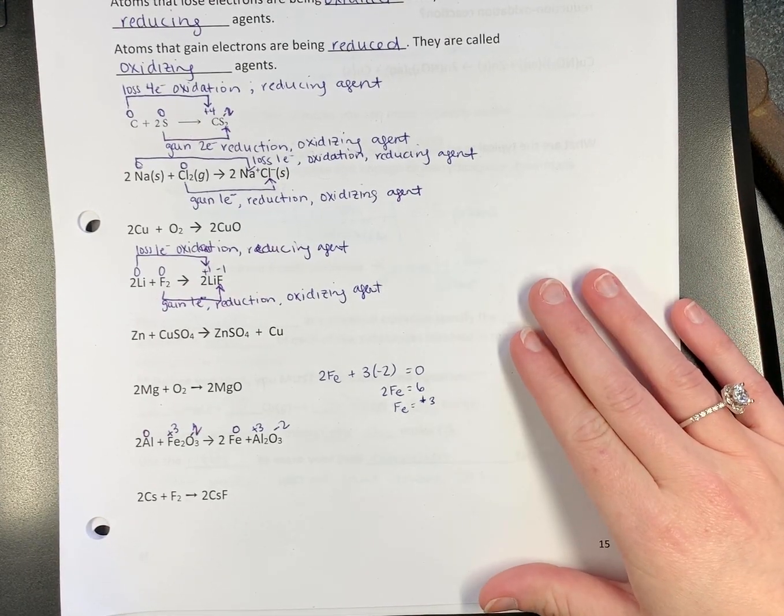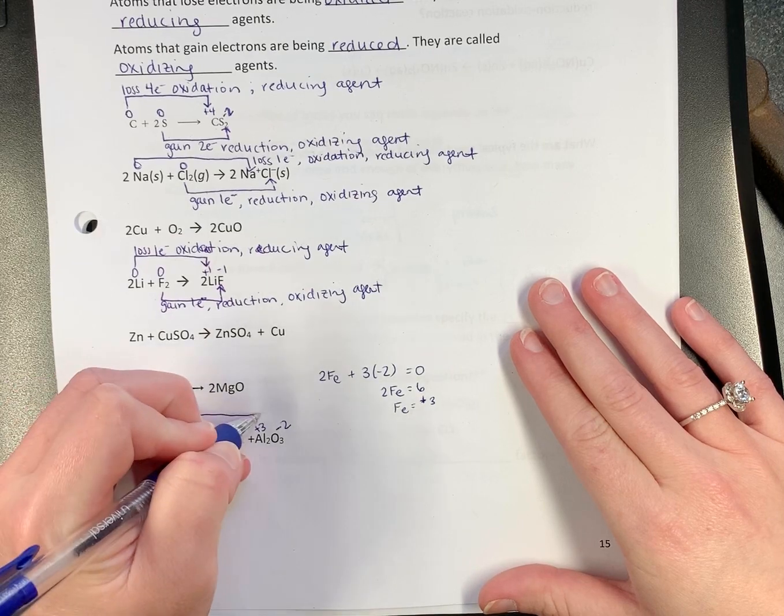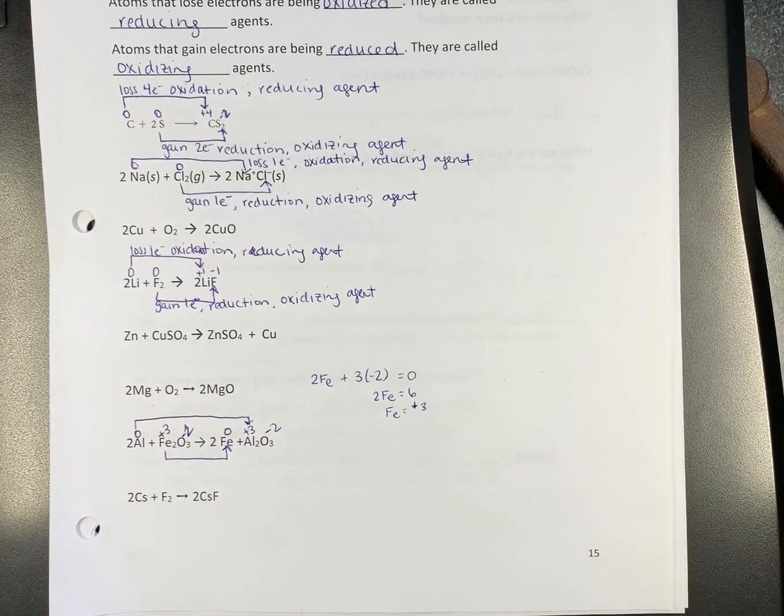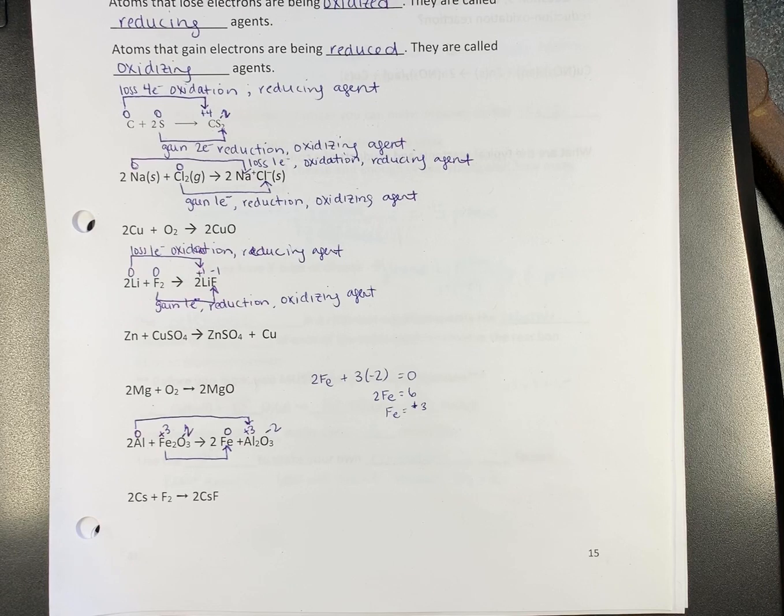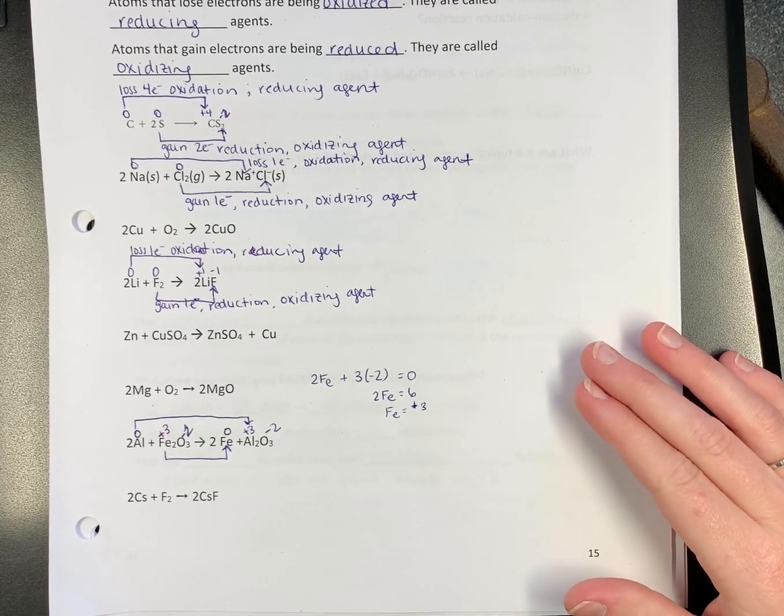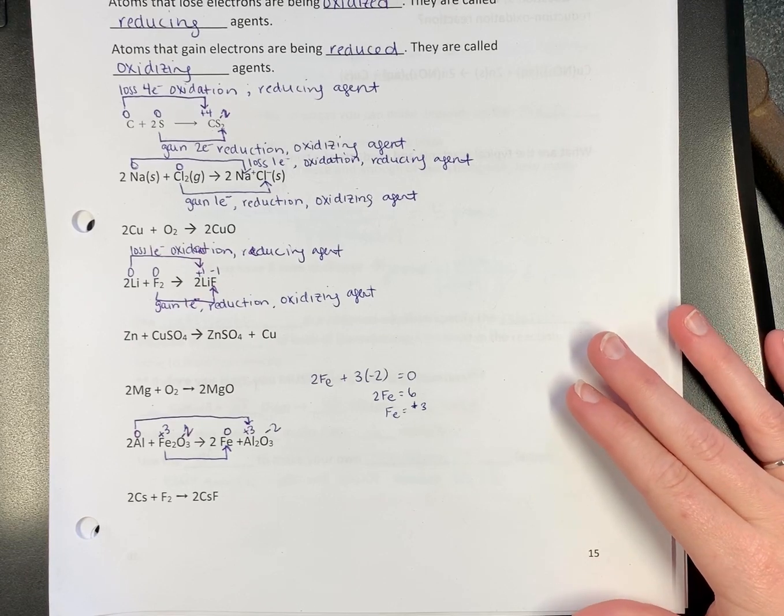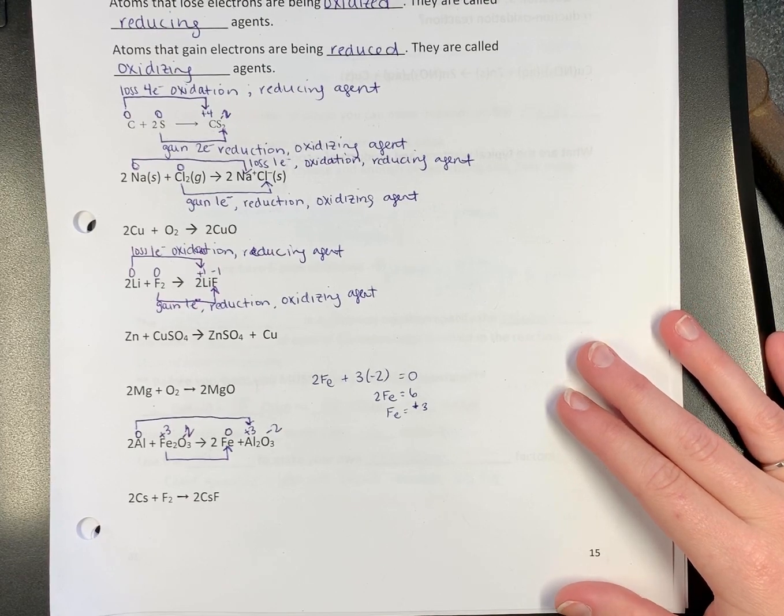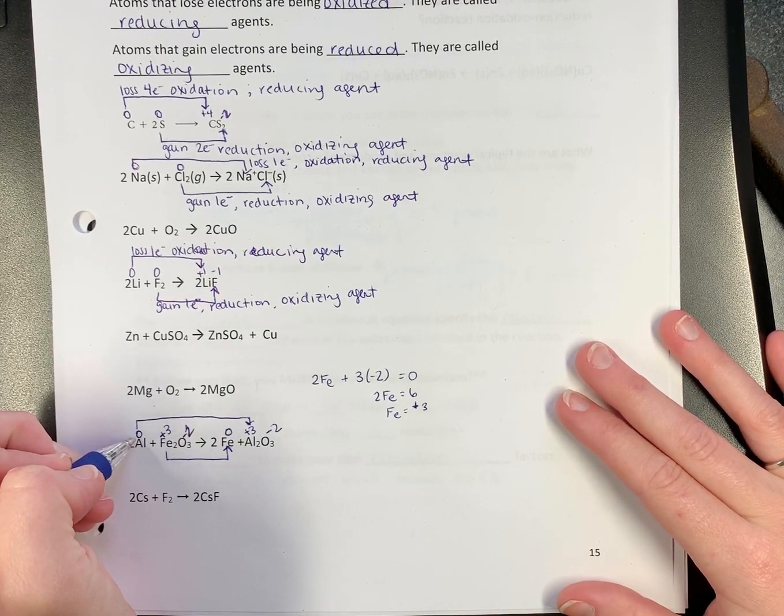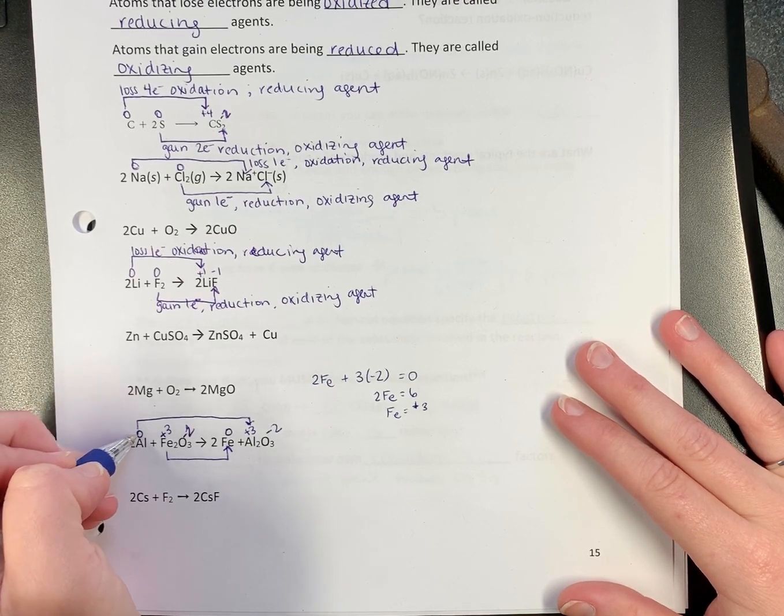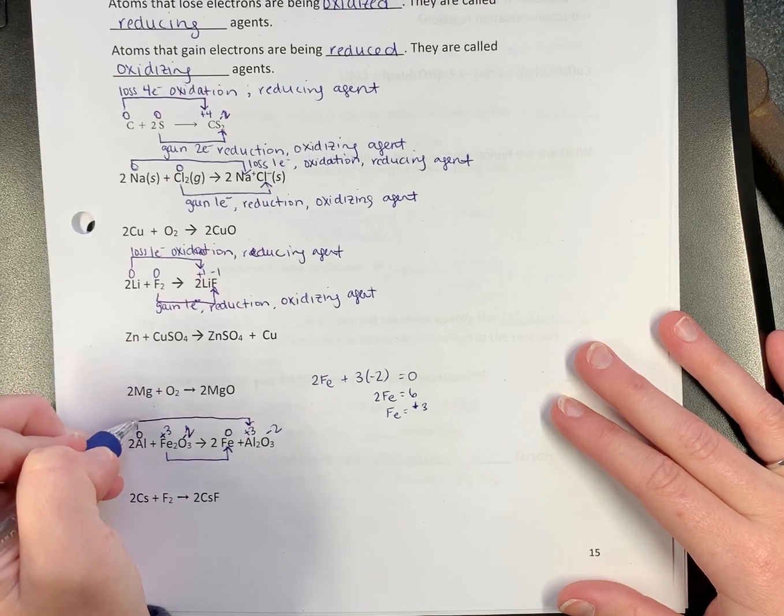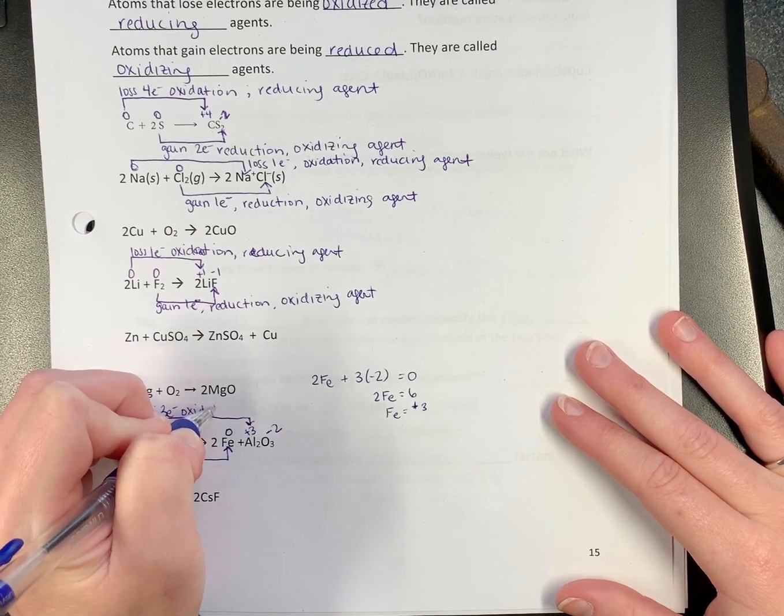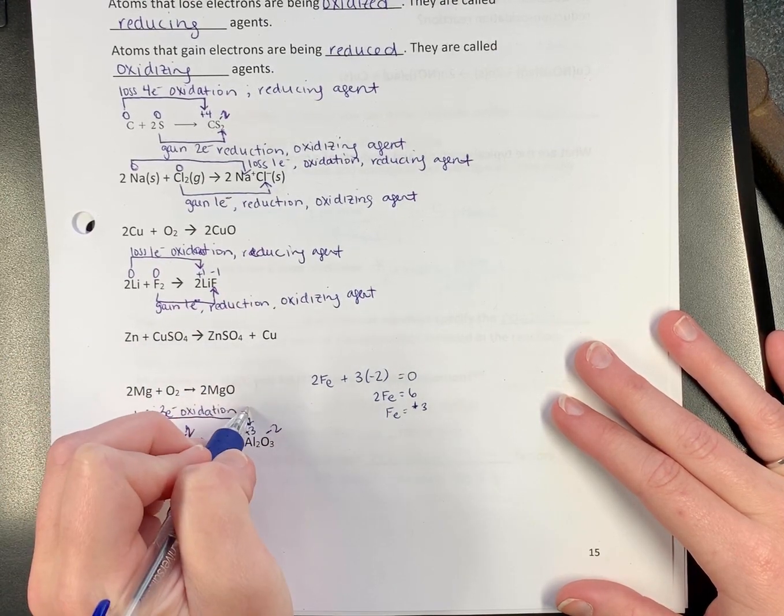Now let's look at what changed. Aluminum changes and iron changes. Note, oxygen does not change. We don't need to draw an arrow to it. I just like to start from the left. So on the top here, aluminum goes from zero to positive three. Gain or loss? Loss. Oxidation or reduction? Oxidation. What kind of agent is it? Reducing.